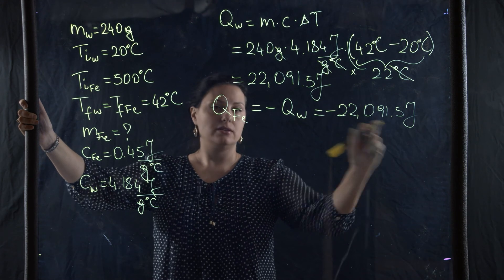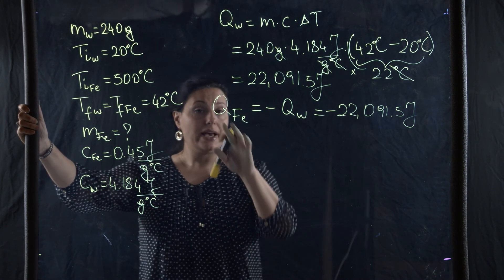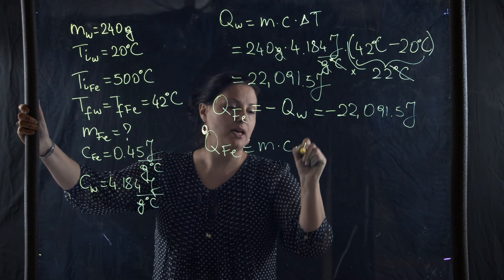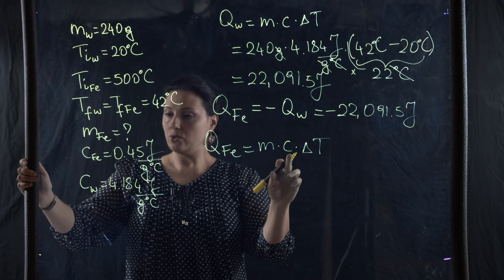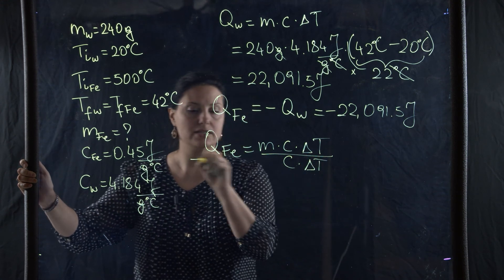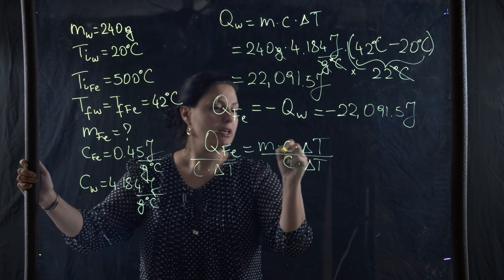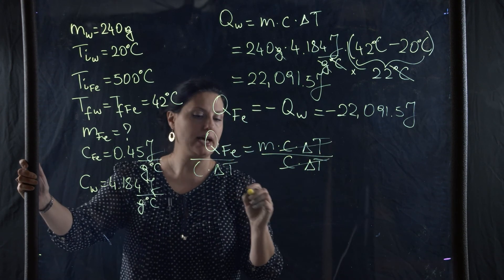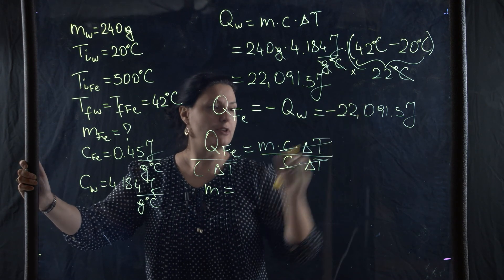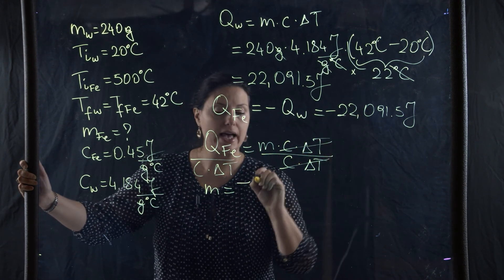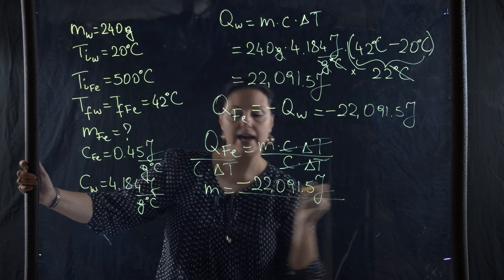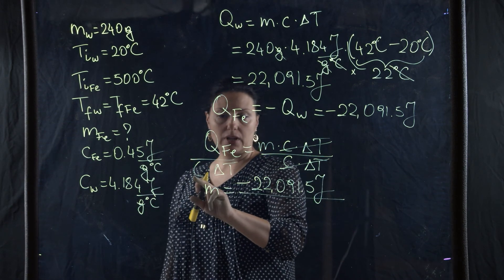Now I know Q_iron = mcΔT for iron. To find the mass of iron I isolate it by dividing both sides by C times ΔT. C and ΔT cancel out, leaving mass isolated, and now I can plug in the numbers. Q for iron is minus 22,091.5 joules.